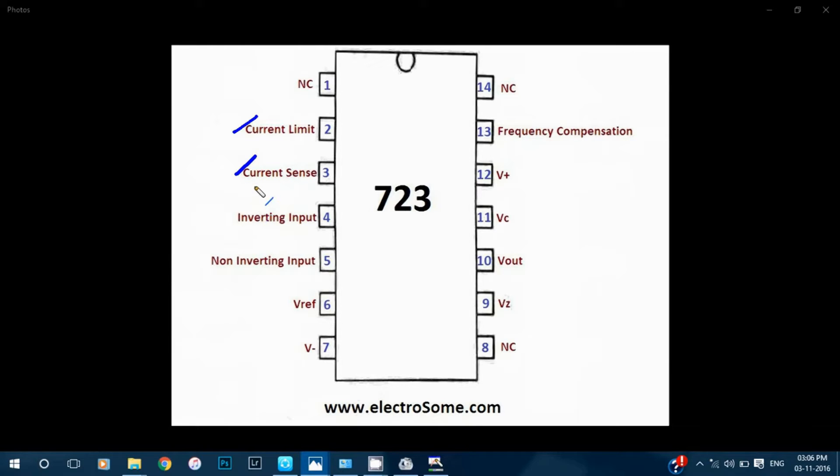The third pin is the current sense. This is the emitter of the current limiting transistor. This terminal is used with current limiting and current foldback applications.